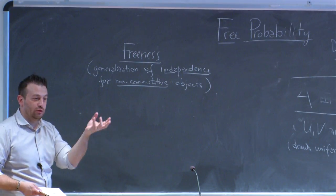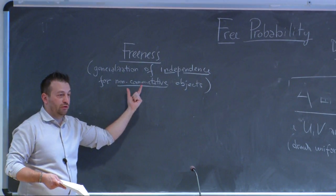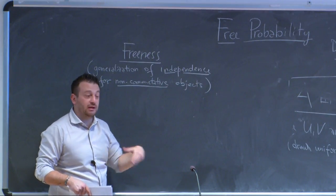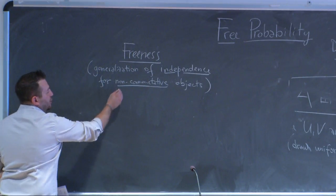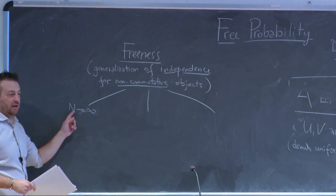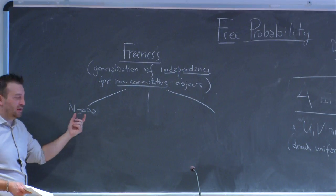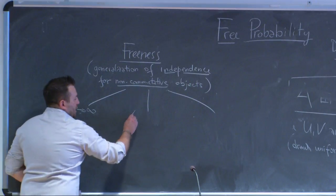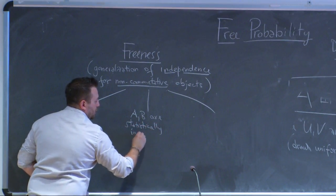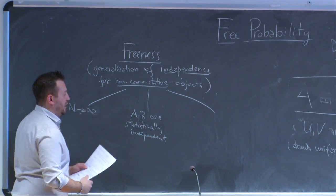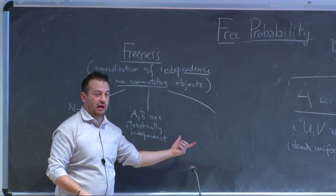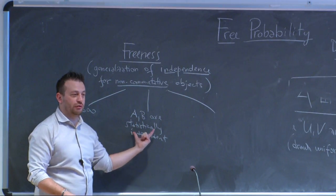Freeness is defined for random matrices — it is a larger concept that applies more generally, but specialized to random matrices, it means the combination of three ingredients. First: N → ∞. Freeness is intrinsically an infinite-dimensional concept, very hard to define for finite N. Second: A and B are statistically independent — the entries of one should not know anything about the entries of the other. Third: the eigenvectors are in generic position, so their precise relative location should not play a role.